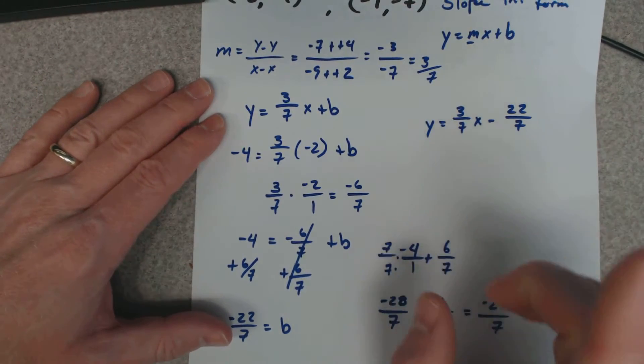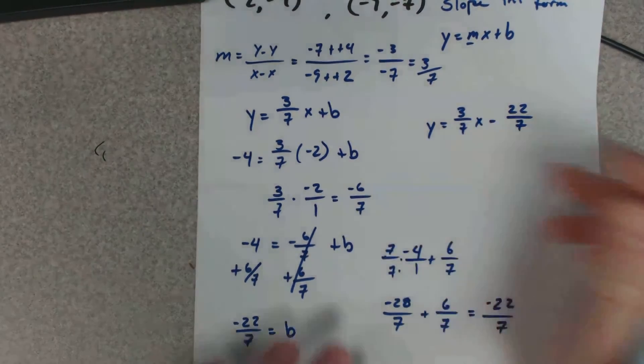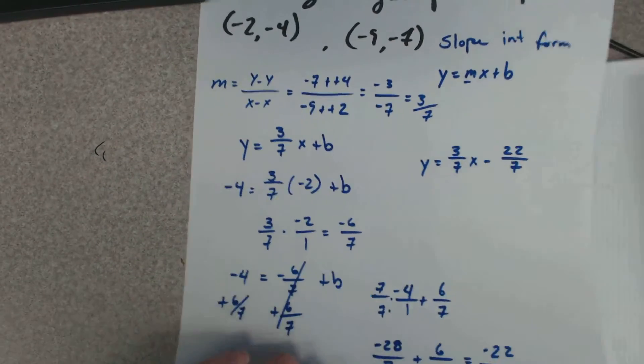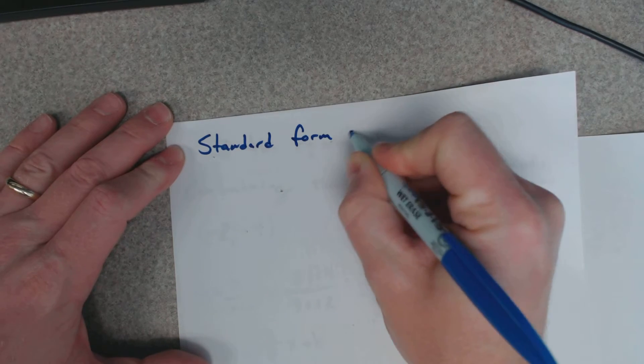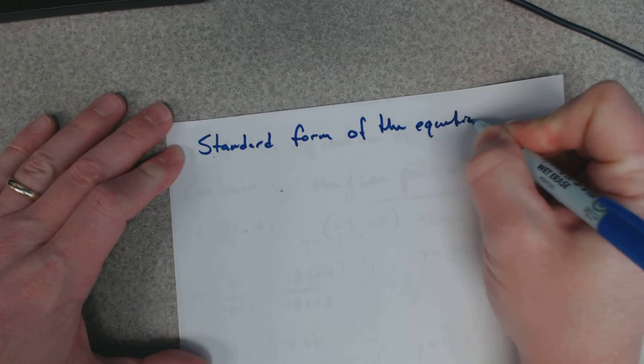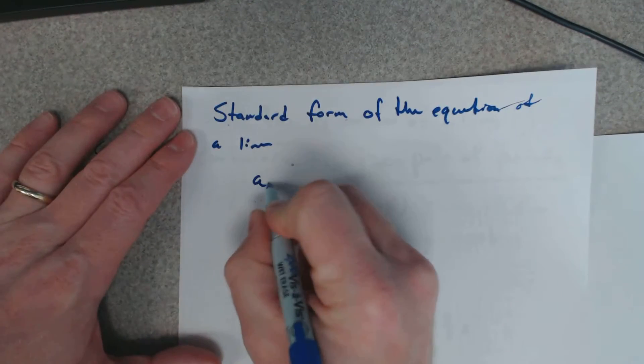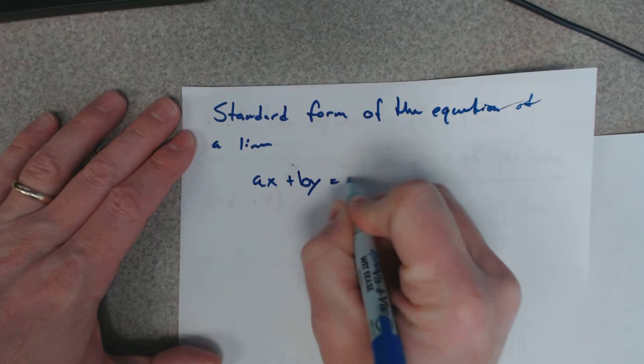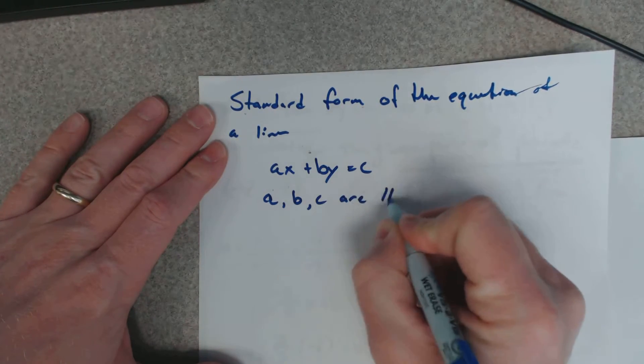Now this is the slope-intercept form, and that's what most questions are asking for. But sometimes they ask for the standard form. Standard form of the equation of a line is ax plus by equals c, where a, b, and c are numbers.